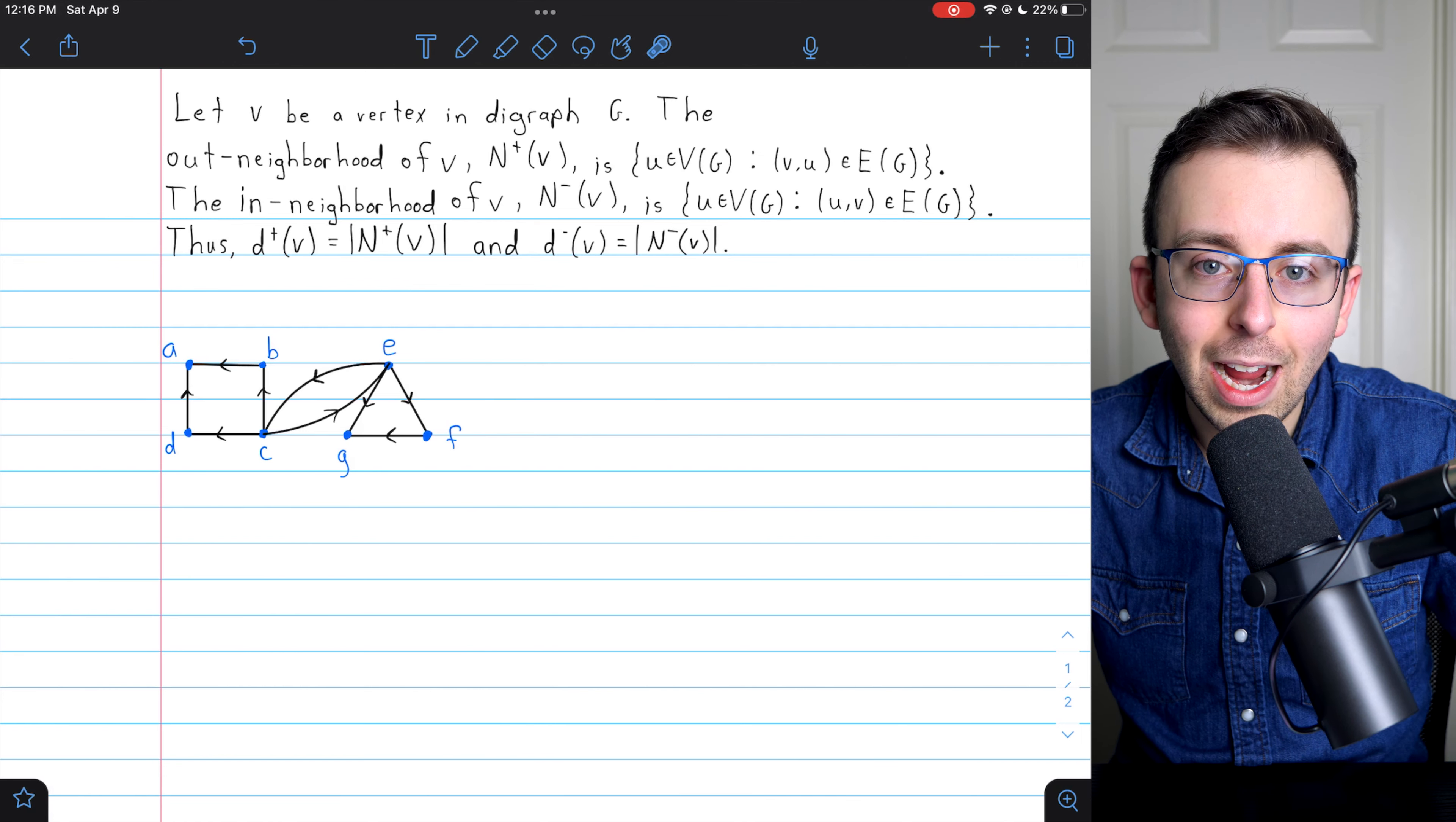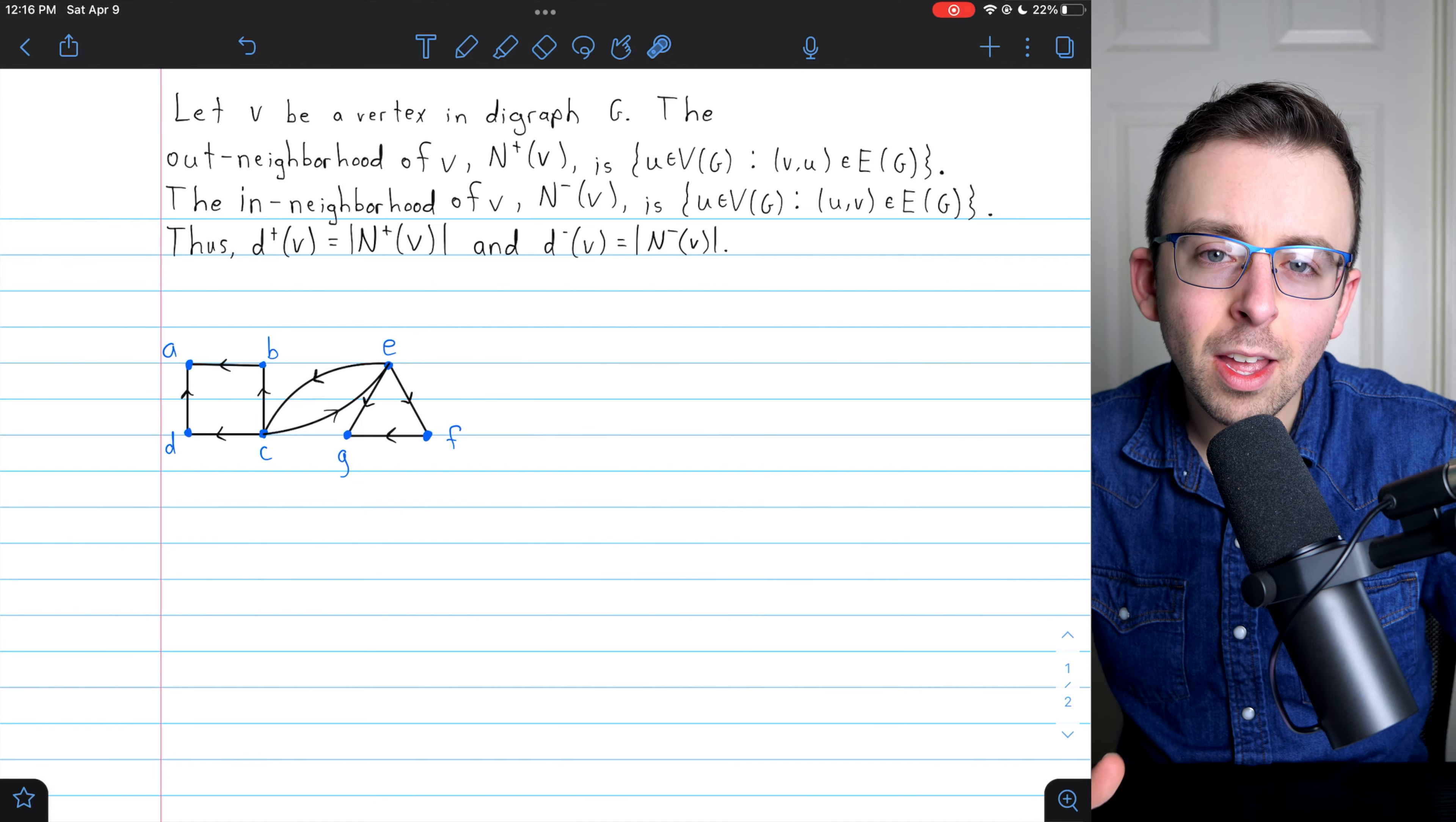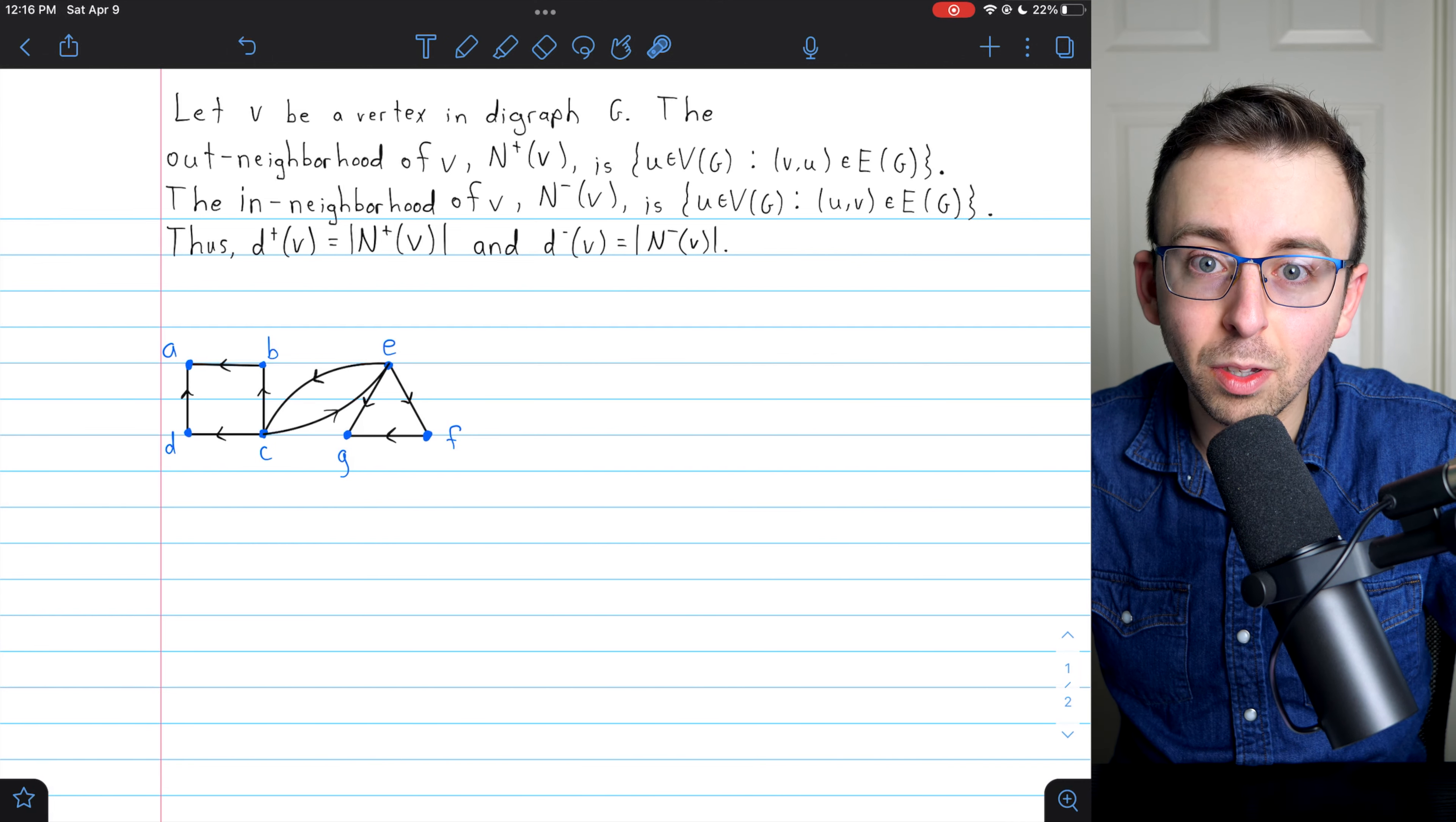In undirected graphs, we said that the neighborhood of a vertex is the set of its neighbors. For directed graphs, though, we have to split that concept in two, because now there are two types of neighbors.